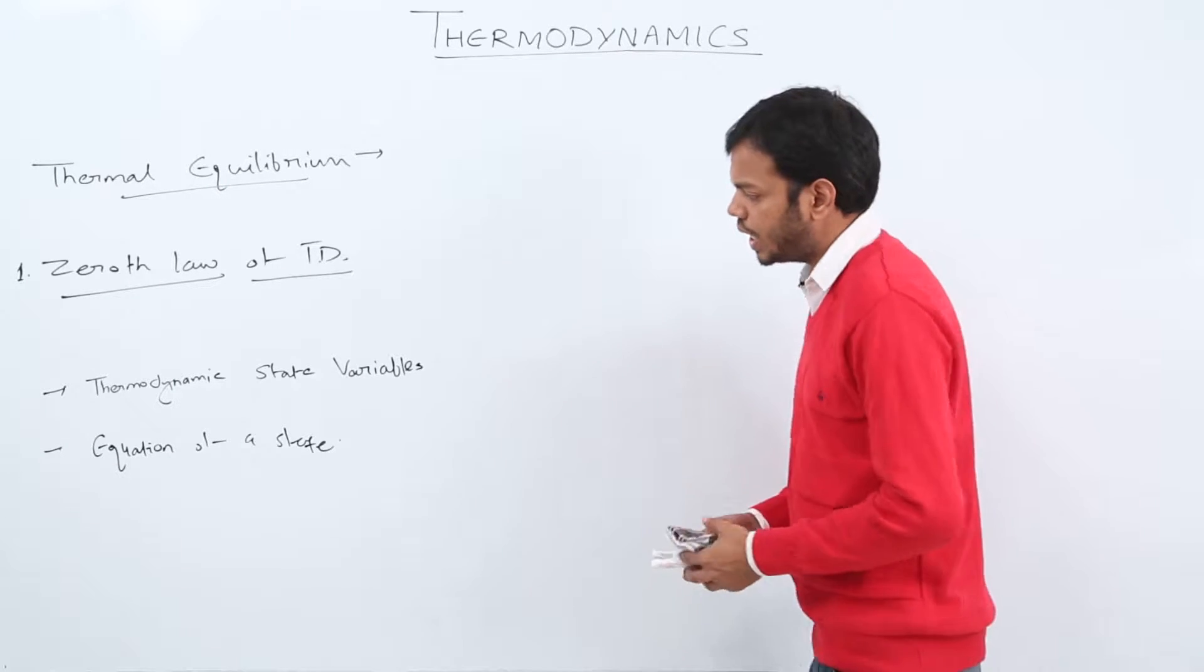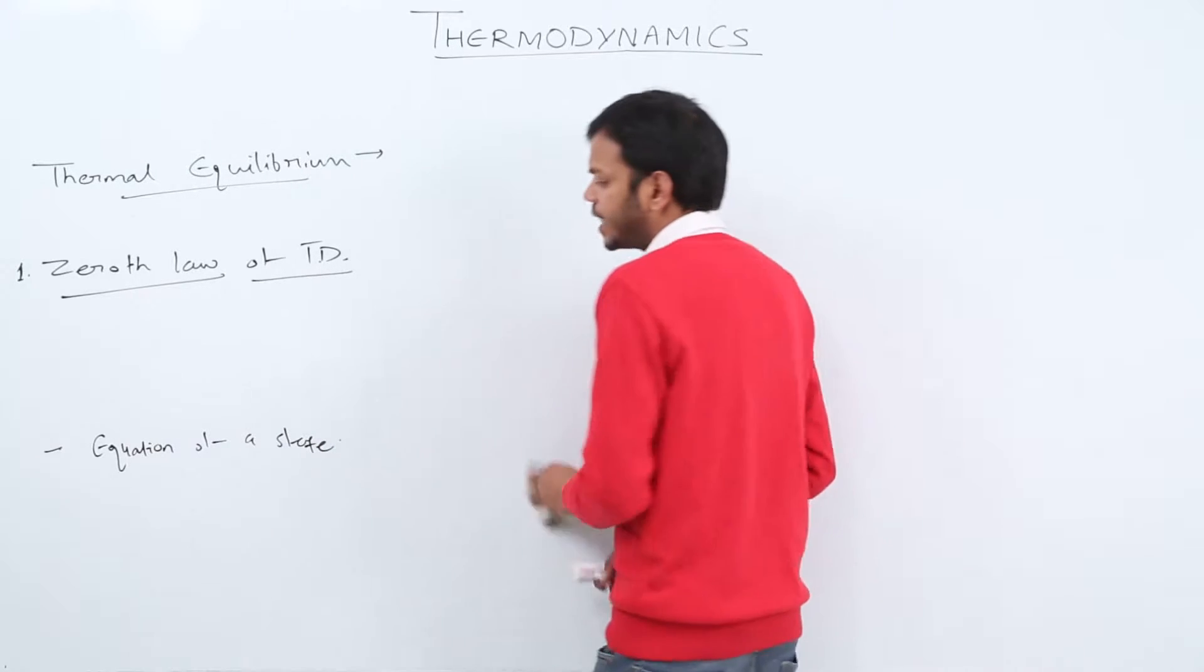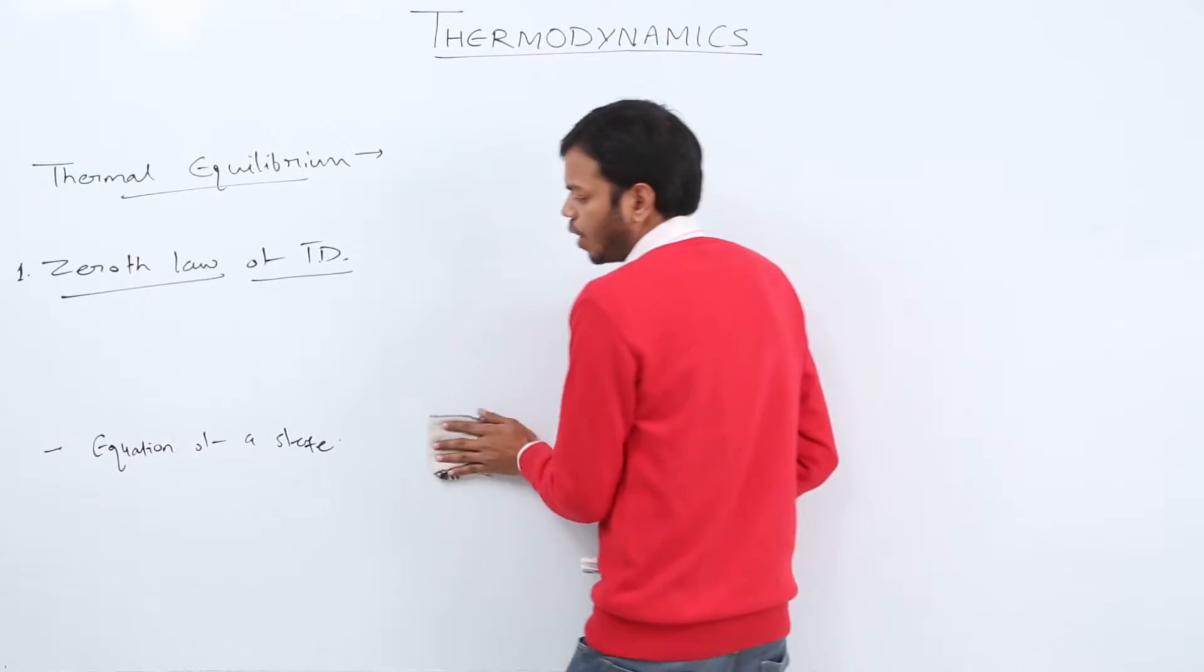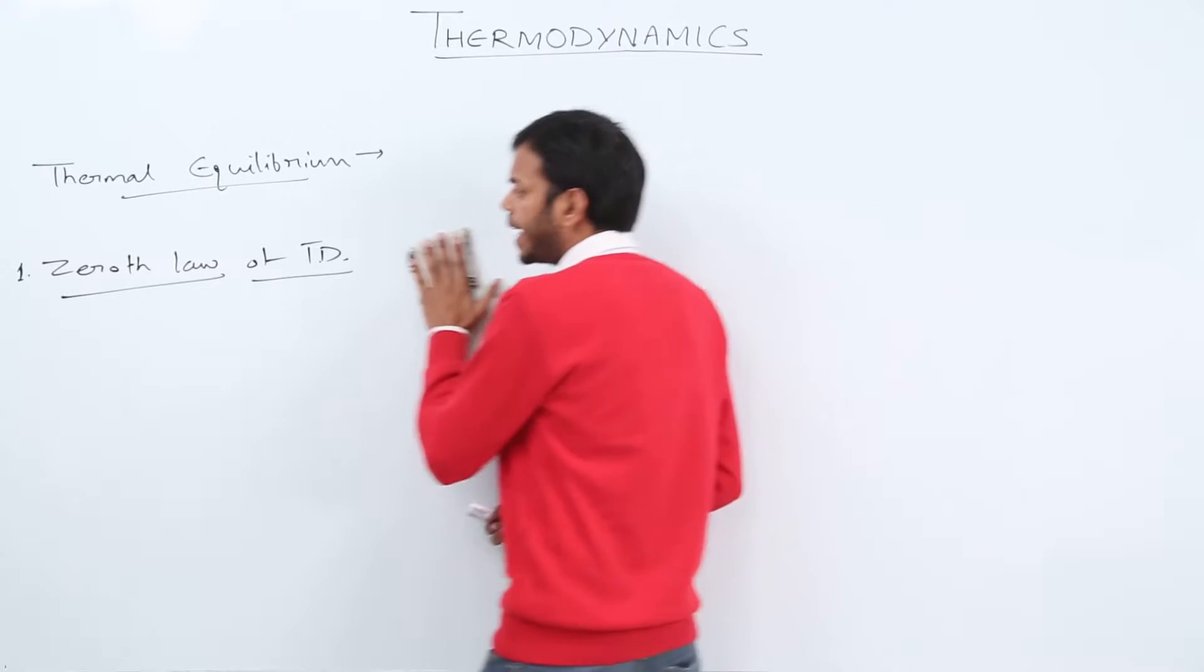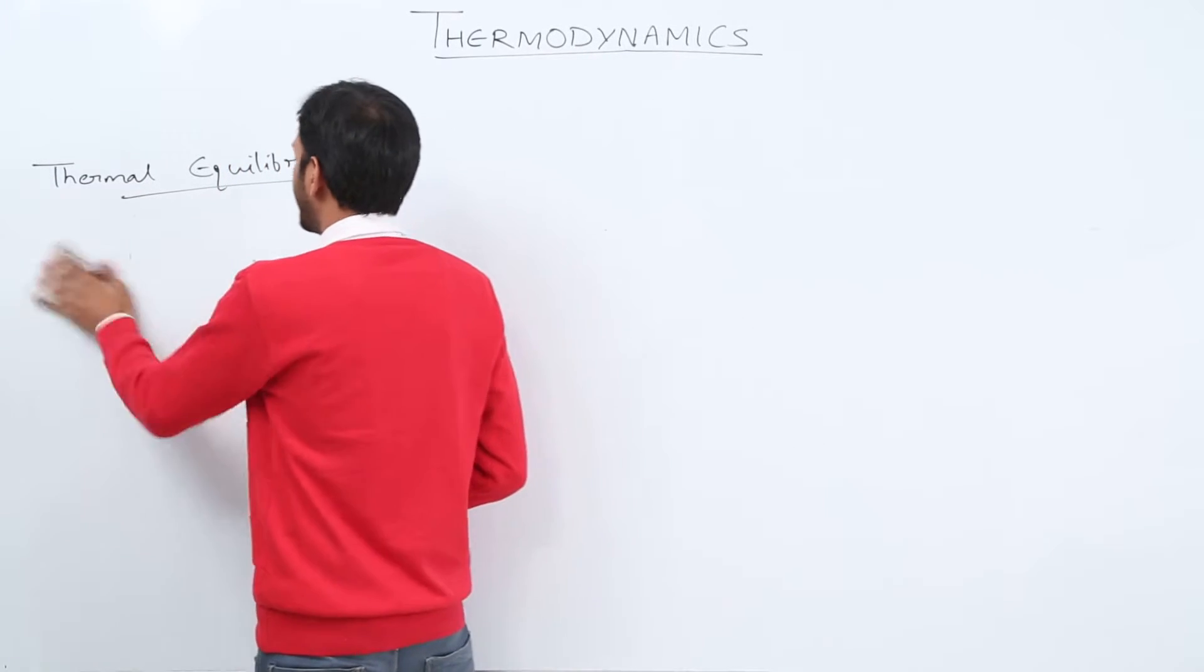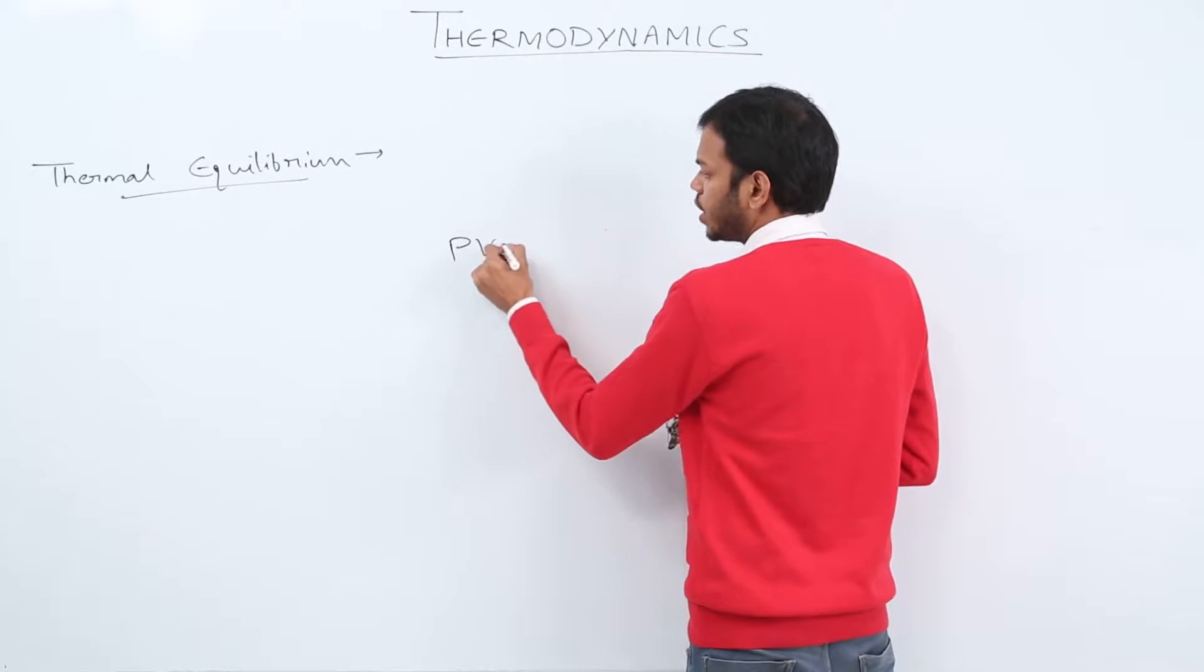Similarly, equation of state is the equation which represents the relation between thermodynamic variables. For example, if I talk about an ideal gas, the ideal gas can be completely represented by an equation which you might have done in chemistry, that is PV equals nRT.